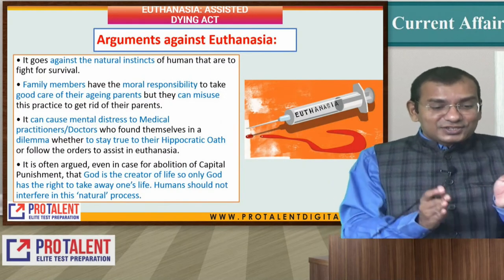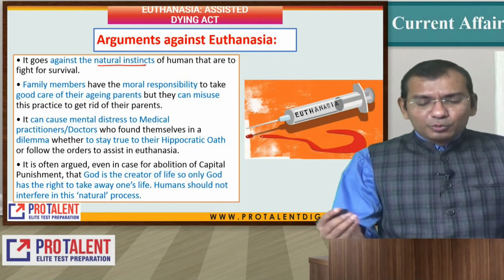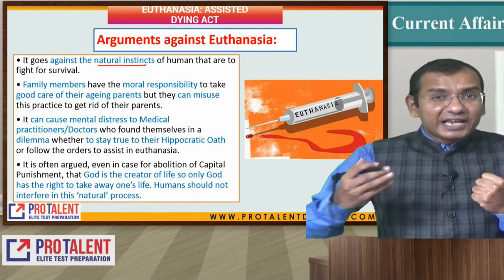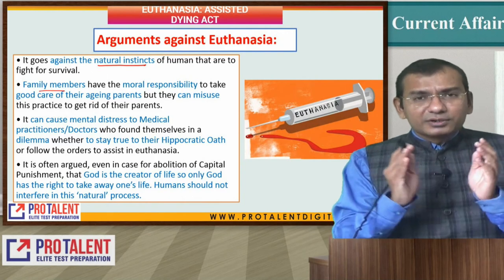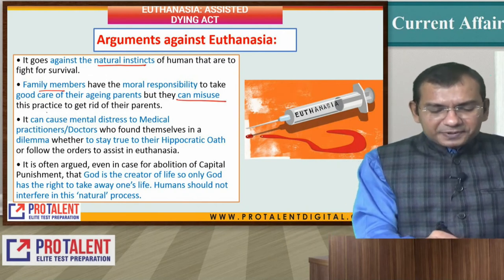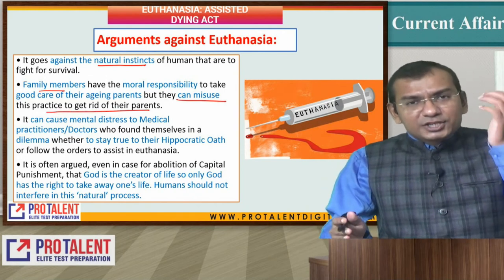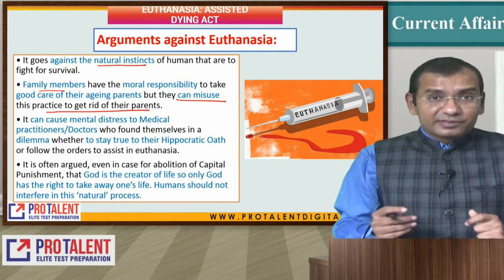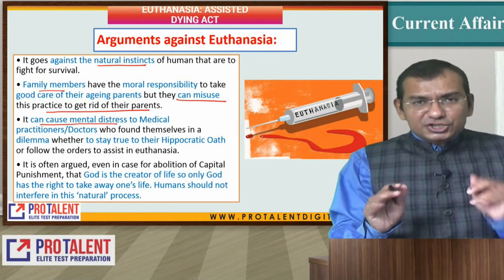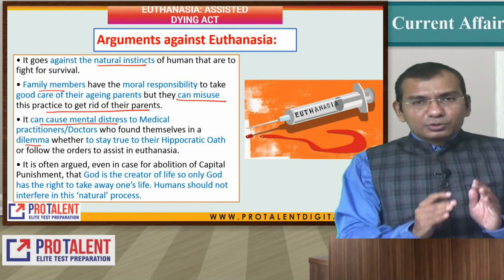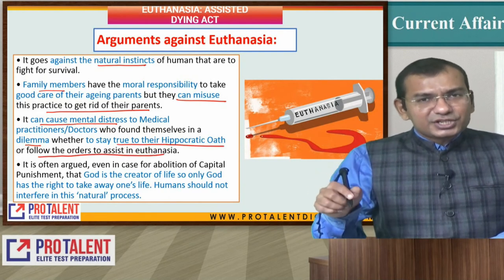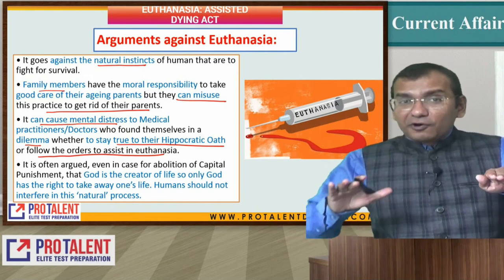What are the arguments against euthanasia? It goes against the natural instincts of humans, who are fighting for their survival — our natural instinct is to fight for survival. Family members have the moral responsibility to take good care of aging people, but they can misuse this practice to get rid of elderly people. It can also cause mental distress to medical practitioners who find themselves in the dilemma of staying true to their Hippocratic oath or following orders to assist euthanasia.